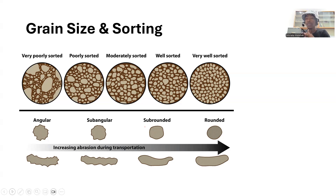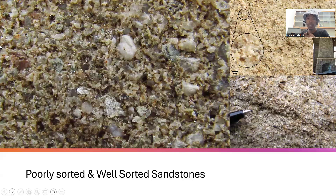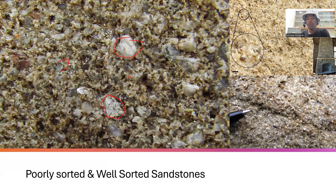If grains are well rounded it means they have been transported for quite some time, because the sharp edges have been worn away. Looking at this image, it is a poorly sorted sandstone — you can see lithics, feldspar, and a wide range of grain sizes. The other images show well-sorted sandstones where grains are almost the same size. That is how you classify sandstone according to grain size and sorting.